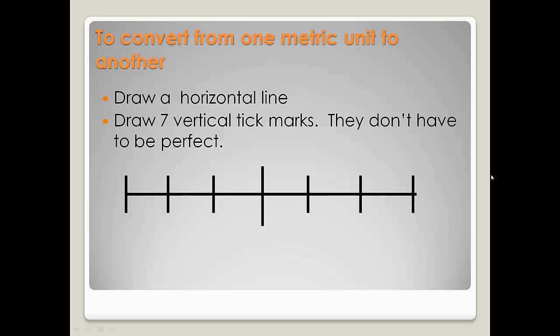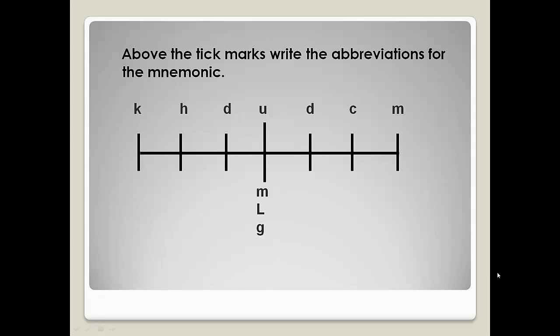When you're converting from one metric unit to the other, the first thing you want to do is draw a horizontal line. It doesn't have to be perfect or even straight. On the horizontal line, you're going to put seven tick marks, kind of like seven days of the week. I make the one in the middle or the fourth one larger, but that's totally up to you.